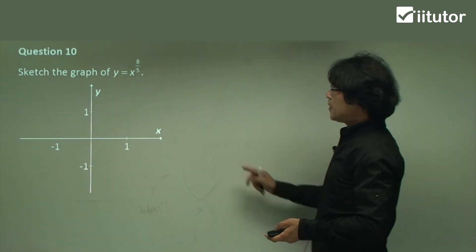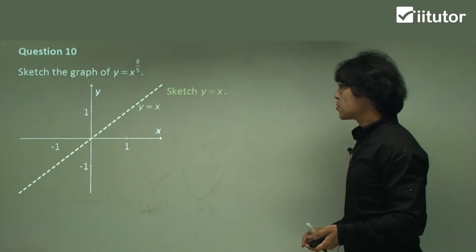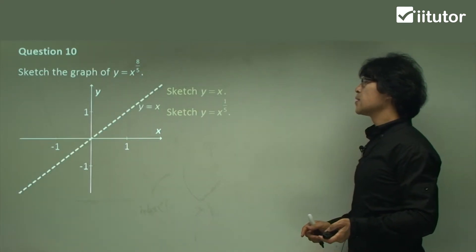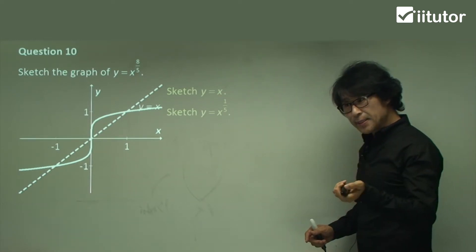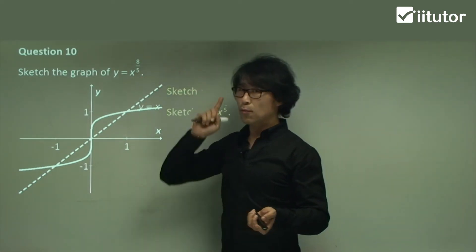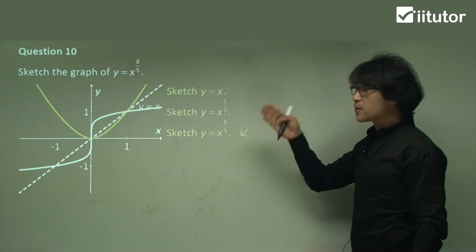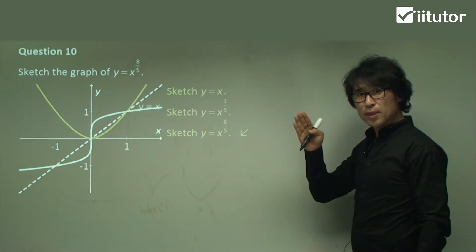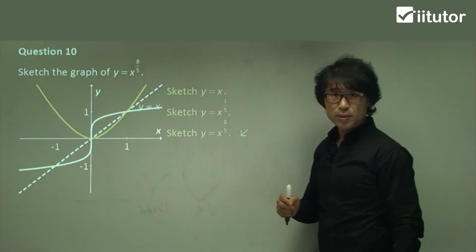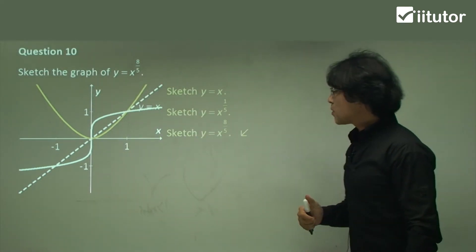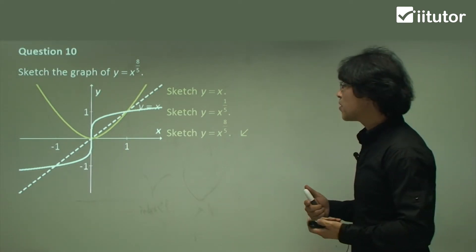Question 10: x to the power of 8 over 5. It is still greater than 1. Sketch y equals x, then x to the power of 1 over 5, and then raise to the power of 8. Make sure this is greater than 1. So it will be a lot smoother and way below the previous question's graph.